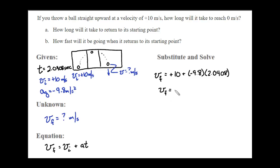10 minus 9.8 times 2.0408 minus 19.999984. So that gives me a velocity final of negative 9.999984 meters per second.